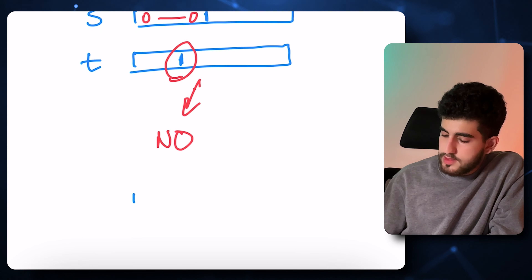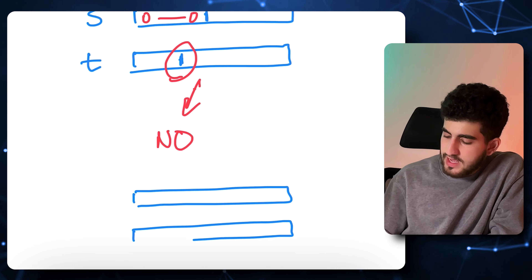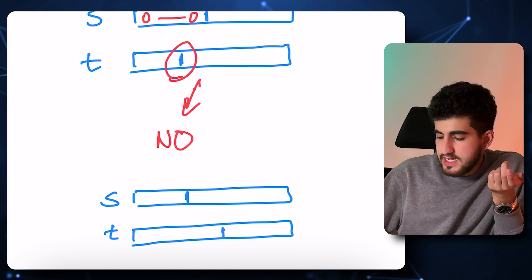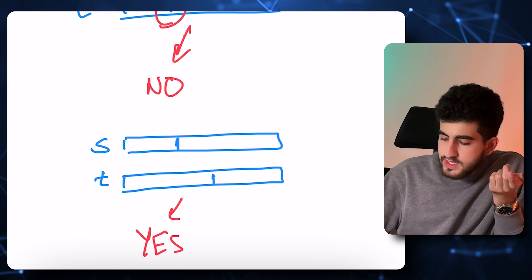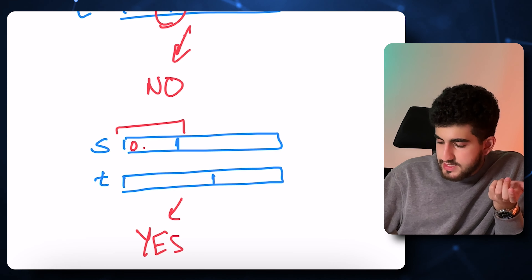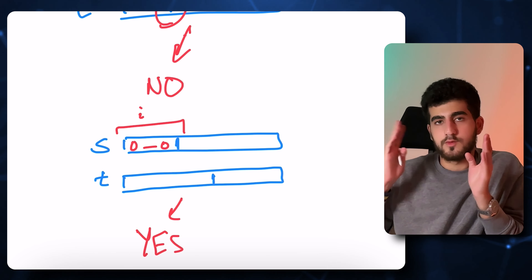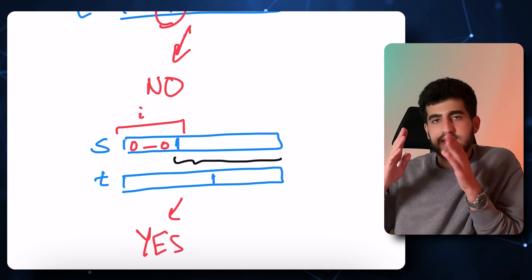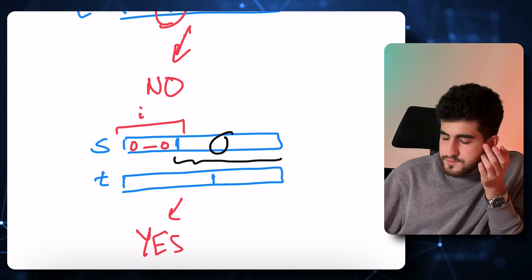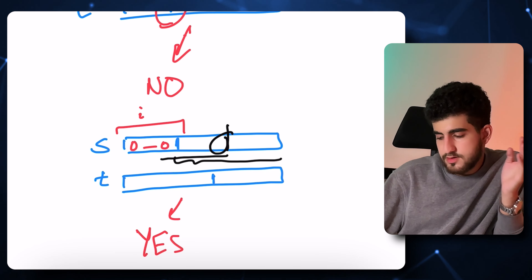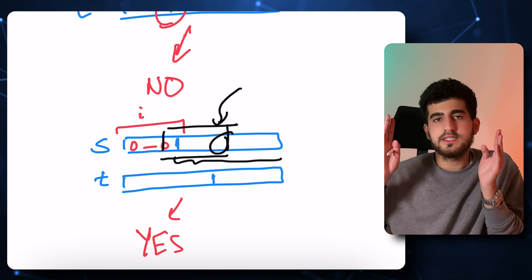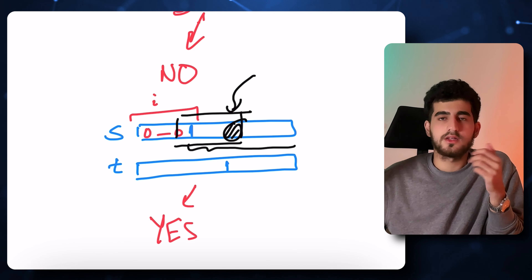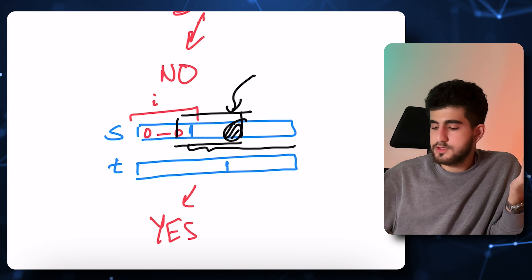However, if the first 1 in s always comes either at the same place or sooner than where the first 1 of t comes, the answer is always yes. After the first 1, we can change every bit we want. Assume there are i bits until the first 1. If we want to change any bits at place i or later, it's enough to consider the interval that starts before that character and ends at it — they will be XORed with the first i bits and only that one will be changed. So after the first 1, we can change s as we want.